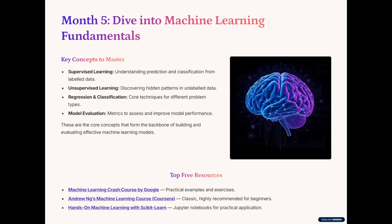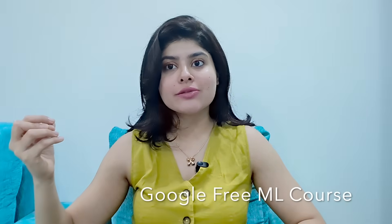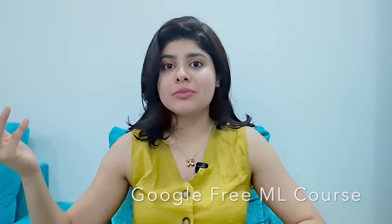Step three is to learn about core ML concepts, which is very important if you want to become a machine learning engineer. You have to learn about supervised versus unsupervised learning, regression, classification, and clustering. You also need to learn about model evaluation — what is accuracy, precision, recall, and F1 score. For a free resource, Google has a free machine learning course, and I'll keep the link in the description below.